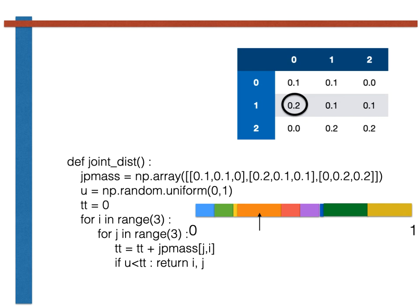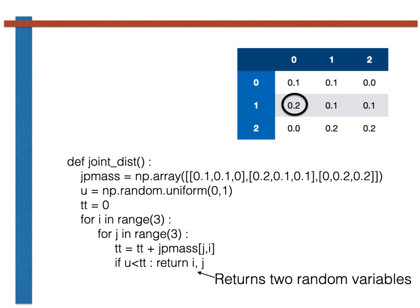At that point the if statement is triggered and the return is executed. Notice that two variables appear after the return statement and that these two variables are returned to the calling code. When we call the function, we must use two variables on the left hand side of the assignment operator, as shown here. And that is all there is to it. In the exercises you will have an opportunity to write code like this yourself. Good luck with that, and as always, thank you for your attention.